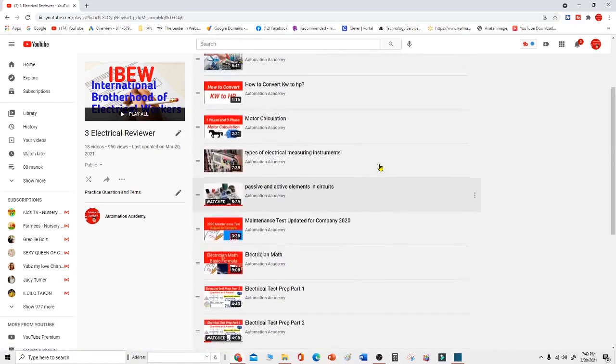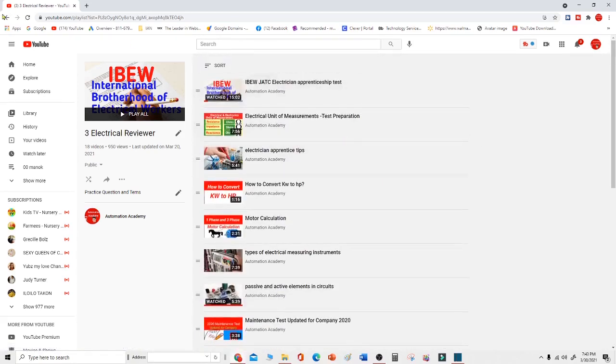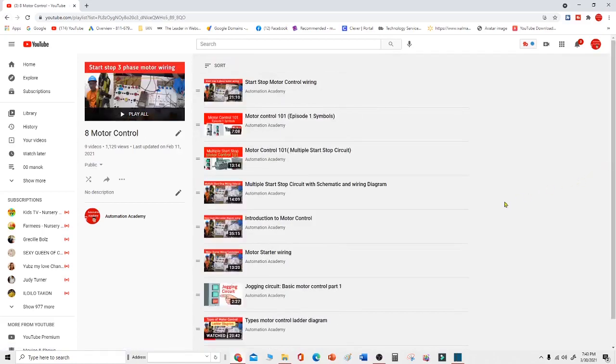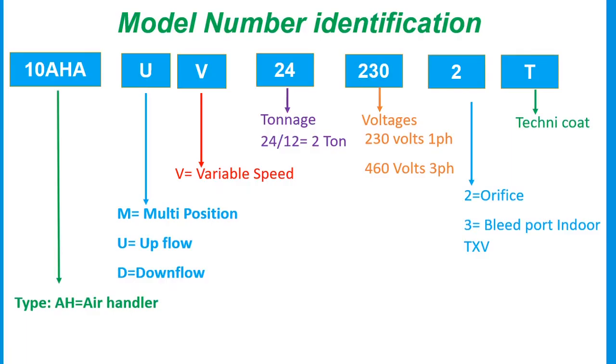AH is the type. AH stands for air handler. U stands for upflow, D stands for downflow. The next letter is V. V stands for variable speed. The next one is 24. 24 stands for tonnage.